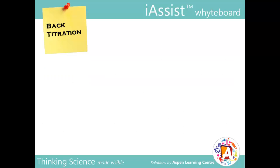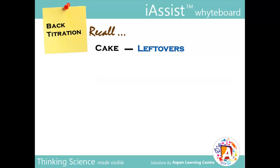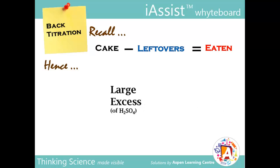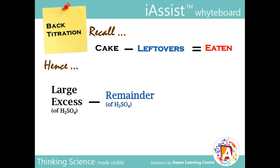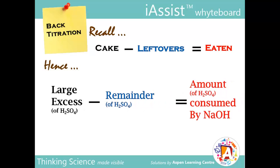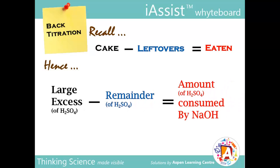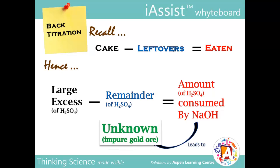Recalling from before that whole cake minus leftovers equals eaten — hence, large excess minus remainder equals the amount consumed by the NaOH, which will lead us to the unknown.